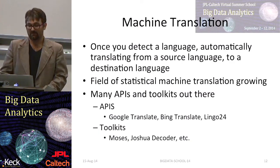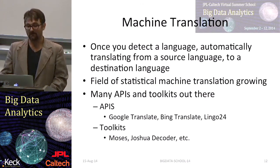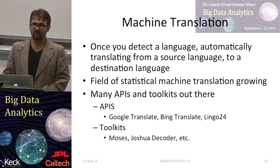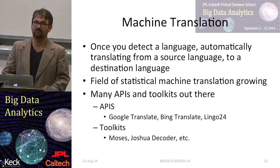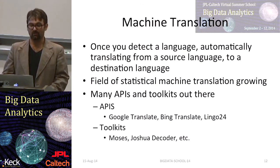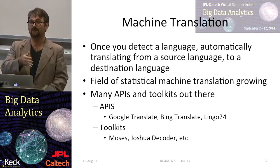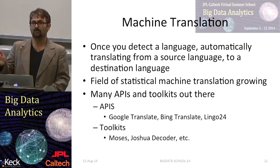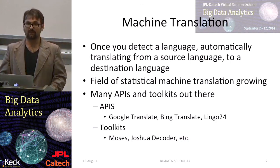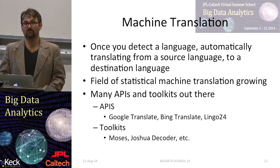Identifying the language is important because once you do, you might perform machine translation — automatically translating from a source language like English to French or vice versa. There's an entire field of statistical machine translation. Many APIs and toolkits are available: Google Translate, Bing Translate, and Lingo24 are API-based machine translation services where you give it text and specify the target language. Open source toolkits like Moses and Joshua Decoder let you train a model on your own data to perform statistical machine translation.